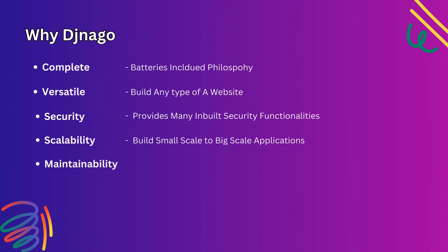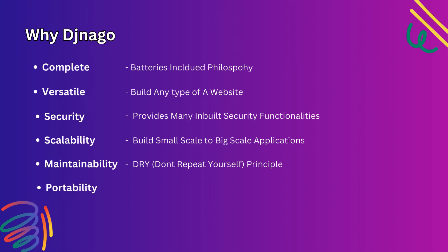Django code is written using design principles and patterns that encourage the creation of maintainable and reusable code. In particular, it makes use of the DRY principle — Don't Repeat Yourself — so there is no unnecessary duplication, which reduces the amount of code we need to write. Django is also portable, written in Python which runs on many platforms. That means you are not tied to any particular server platform and can run your applications on Linux, Windows, Mac OS, and other operating systems.